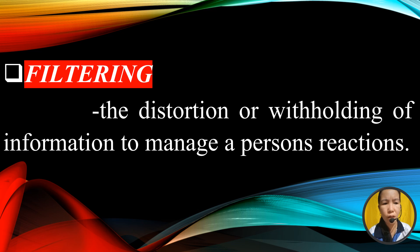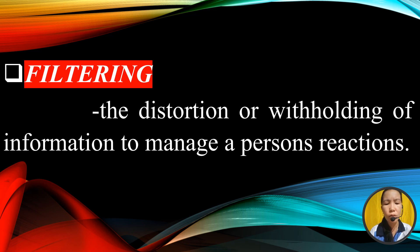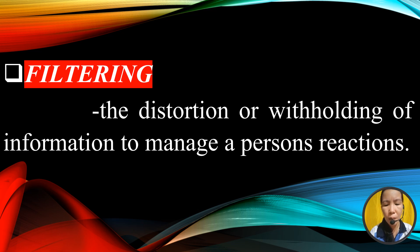First is filtering — the distortion or withholding of information to manage a person's reactions. Ang filtering sa konteksto ng komunikasyon ay tumutukoy sa sadyang pagbabago, pagbaluktot, o pagpigil ng impormasyon upang pamahalaan o impluensyahan ang reaksyon ng isang tao. Maaaring gawin ito upang protektahan ang isang tao mula sa nakababahalang impormasyon, iwasan ang hindi pagkakaunawaan, manipulahin ang pananaw ng isang tao, o mapanatili ang kontrol sa isang sitwasyon. Bagamat maaaring makamit ng filtering ang panandaliang layunin, maaaring itong magdulot ng hindi pagkakaintindihan, kawalan ng tiwala, at pangmatagalang problema sa komunikasyon. Kapag nalaman ng isang tao na may ipinilit na impormasyon, maaaring masira ang relasyon at kredibilidad.